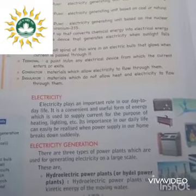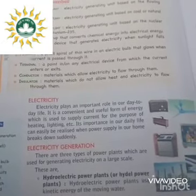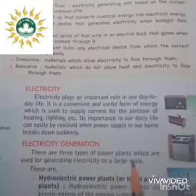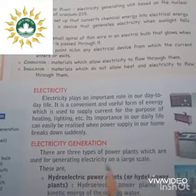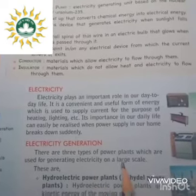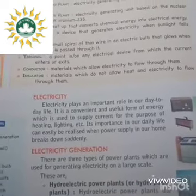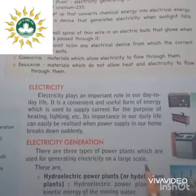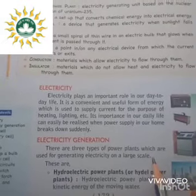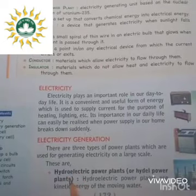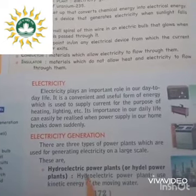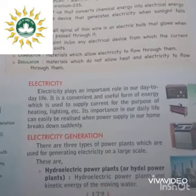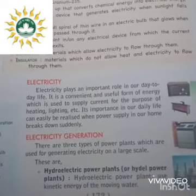So we all know that electricity is very important, but how is this electricity generated? First of all, there are some terms we should know. There are three types of power plants used for generating electricity on a large scale, because electricity is always generated on a large scale and then supplied to different places. The first type is the hydroelectric power plant, also called the hydro power plant.